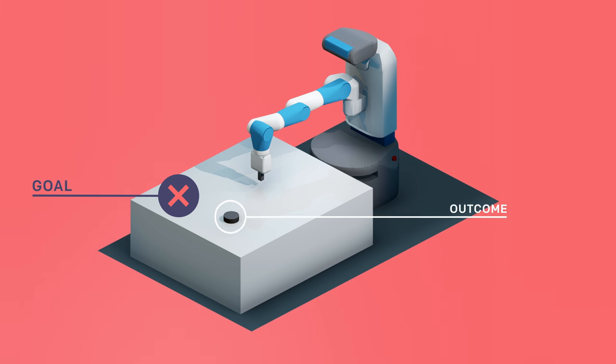With HER, instead of the original goal, we pretend that we in fact wanted to slide the puck to where it landed. If our goal had been here, this attempt would have been successful.